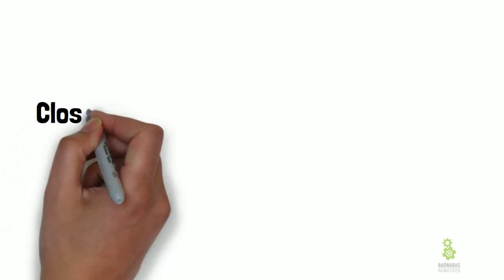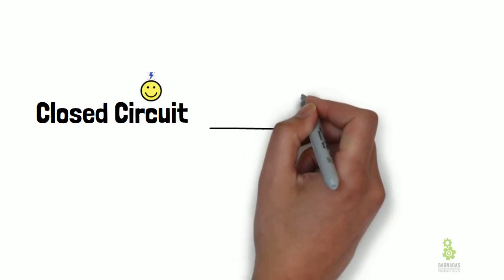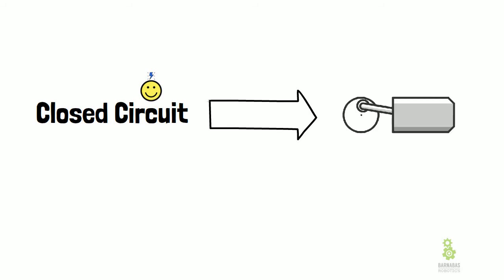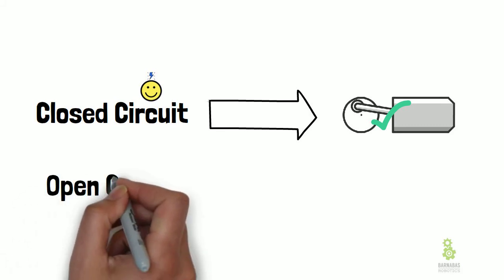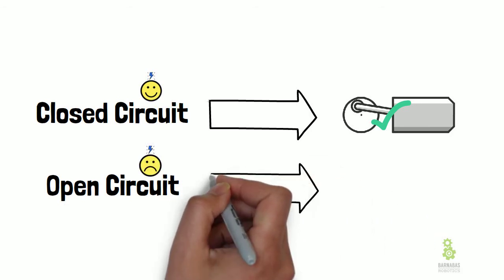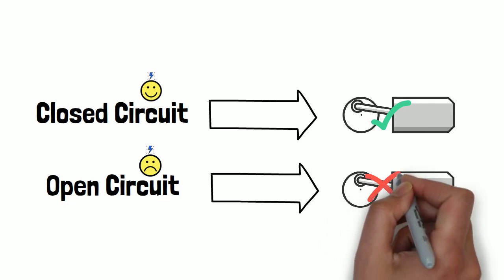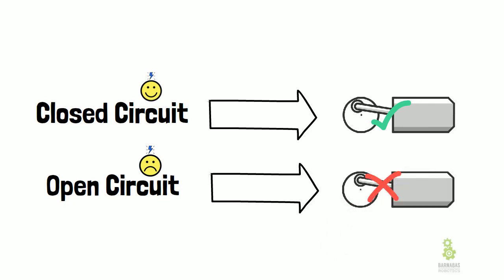Let's recap: a closed circuit is when Mr. Electricity is happy and comes out, and the motor turns on. An open circuit is when Mr. Electricity is sad - he stays in, doesn't come out, and the motor is not on.